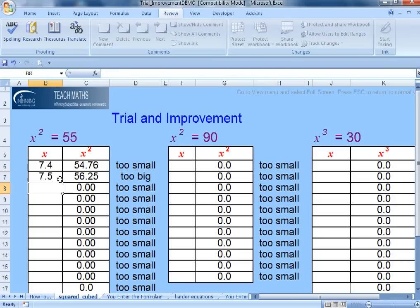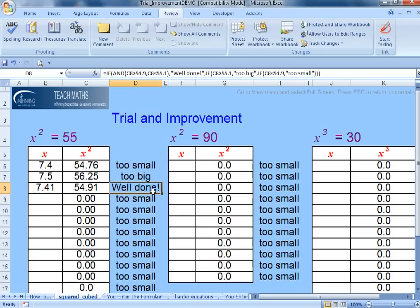So I'm going to try something a bit bigger. That says too big so it's got to be in between 7.4 and 7.5. If I look that's closer to 55 so I probably want to try something close to 7.4 and if you get within 0.1 of the actual target number it will say well done you've succeeded.